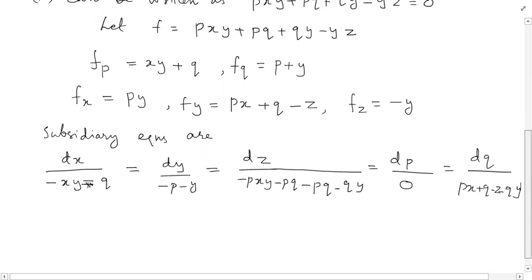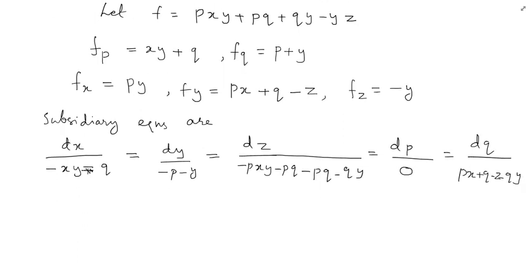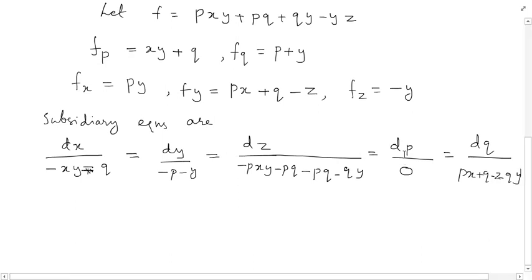From the subsidiary equations, we observe dp by 0, which means dp equals 0, implying p is a constant. We take p equal to a as equation number 2. Depending on the problem, we may get p constant, q constant, or a relationship connecting p and q.